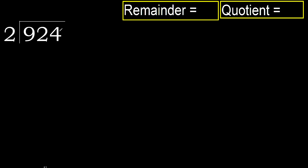924 divided by 2. 9 is not less, therefore with 9: 2 multiplied by which number is nearest to 9 but not greater? 2 multiplied by 5 is 10 — it is greater. Multiply by 4 is 8 — it is not greater.